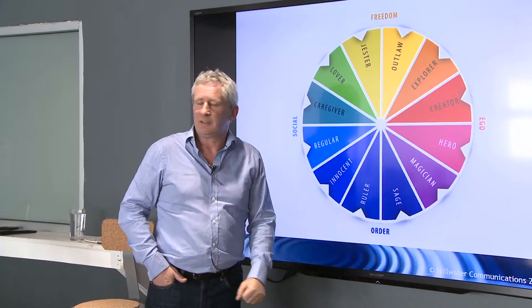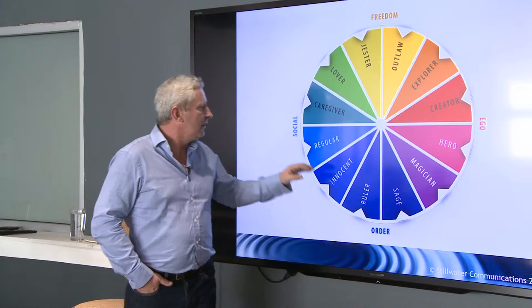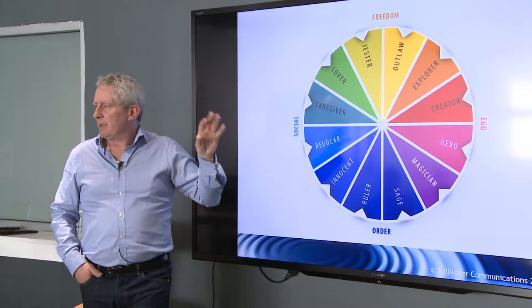Are you in the order end — innocent, ruler, sage? Are you social — the caregiver, regular? Do you understand what I mean by this? So if I said something like Apple, where does Apple live on this?